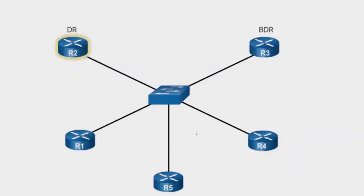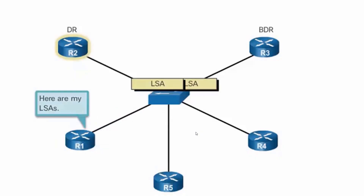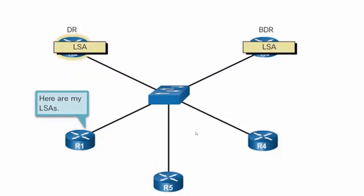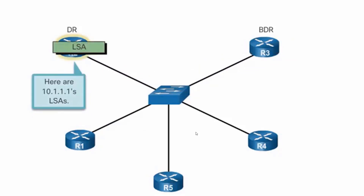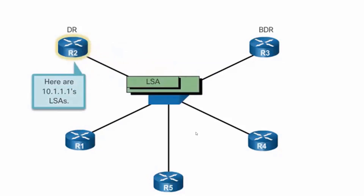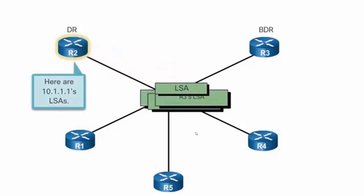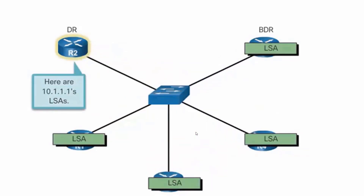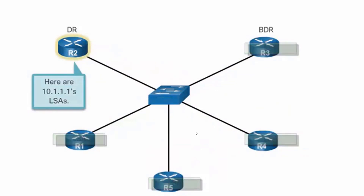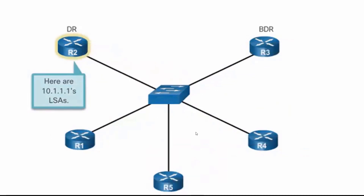When R1 has a change, R1 only notifies the DR and BDR, saying here's the change — it has full convergence with them. The DR then accepts that change and notifies all routers it has a full state with, which is everybody. Routers 4 and 5 don't notify each other because they only have a two-way state with each other and a full state only with the DR and BDR.